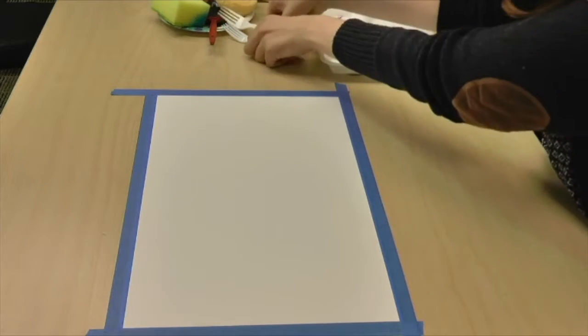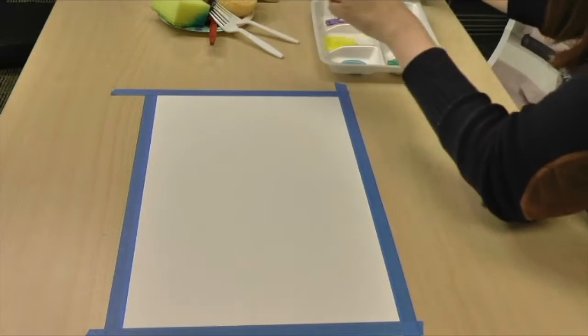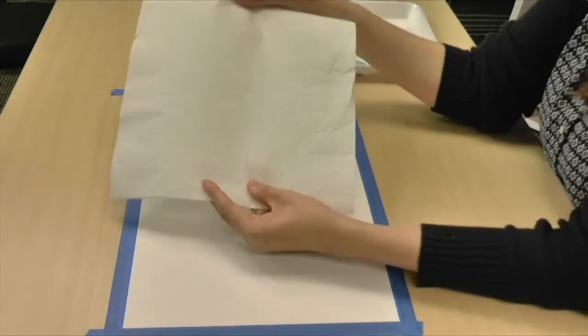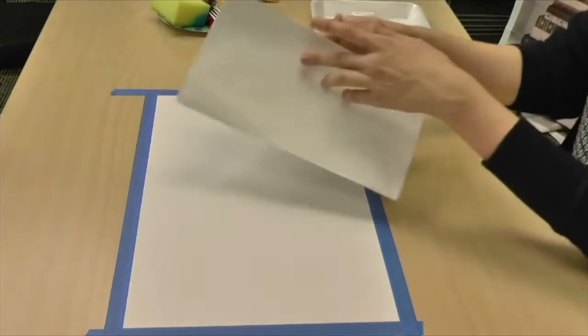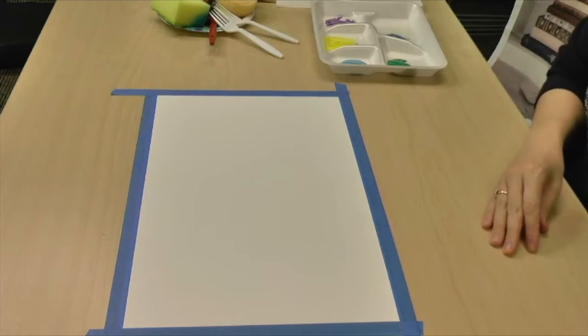We also have some forks which you can use, and then we're also going to try to use a piece of paper towel because this has a cool pattern on there. So we're going to try to use that and see what different objects make on the paper.